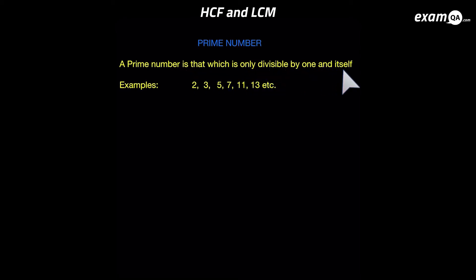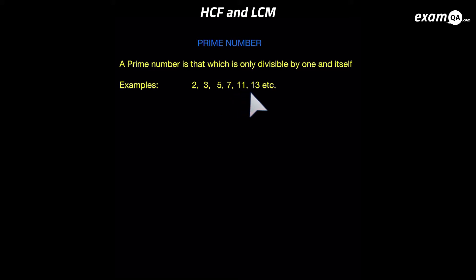We've got a few examples here. Two, for example, is divisible by one and two. Three is only divisible by one and three, and five is divisible by one and five, and so on. There's an infinite amount of prime numbers.